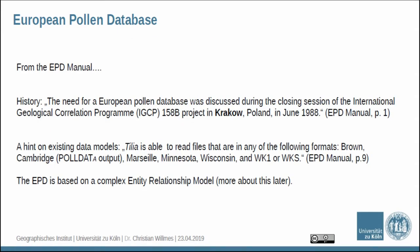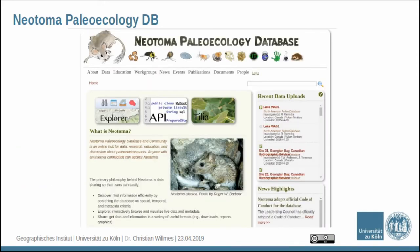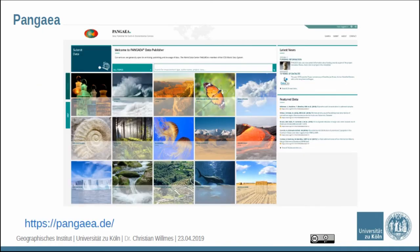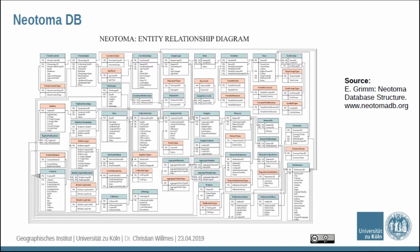From their manual, the idea was founded in Krakow in 1988 for this pollen database. They already had some concerns about data formats, but they also ended up with their own data format more or less. It's quite a complex entity-relationship model. The biggest palynology database I found on the web is Neotoma, a paleo-ecology database, which has more or less the same entity-relationship diagram as the European Pollen Database. I assume it's just an evolution of that schema, developed further and applied to their data. It's really powerful, but with great capabilities comes great complexity.